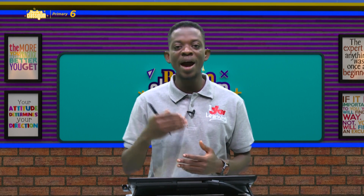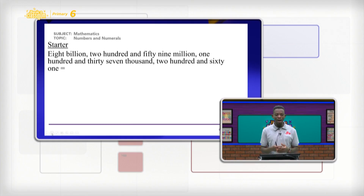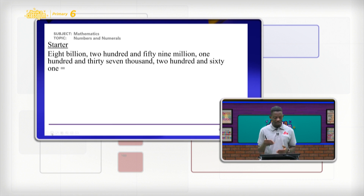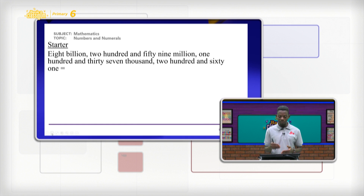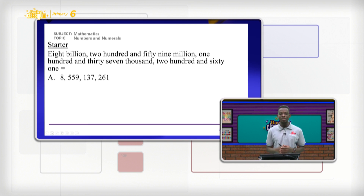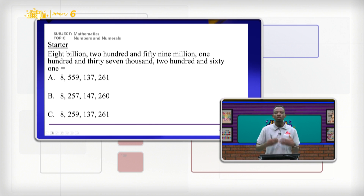Today we are going to start by identifying the numeral for a written number or a number name. That is going to be our starter. The number name being displayed on your screen is 8,259,137,261. What is going to be the numeral for this particular number name? We have three options there.